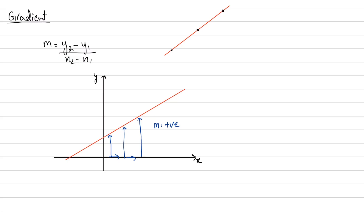Why is this important? Sometimes a question will give you multiple lines and equations but won't tell you which equation belongs to which line. For example, suppose I have the equation y = -3x + 5 and another equation y = 2x + 3. Just by looking at a rising line I can conveniently say it corresponds to the equation with a positive gradient. I can also see that it has a positive y-intercept. So since the first equation has a negative gradient, it's straight away not going to match a rising line.